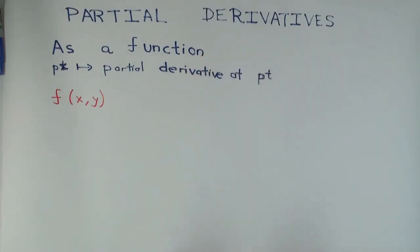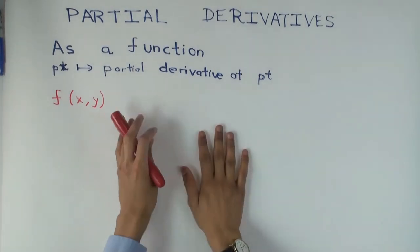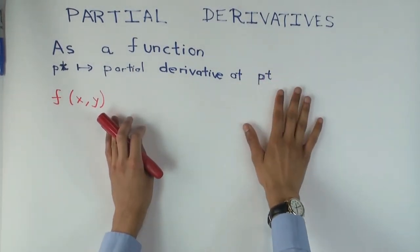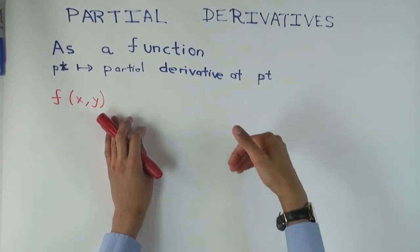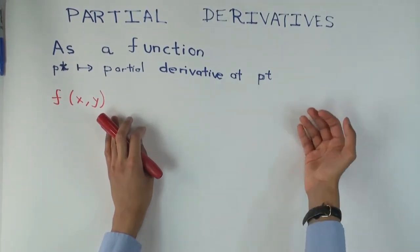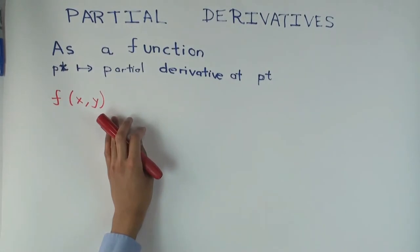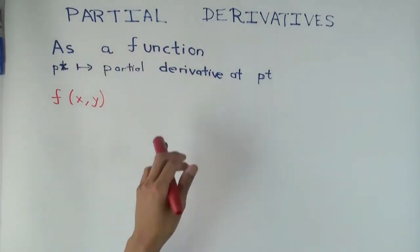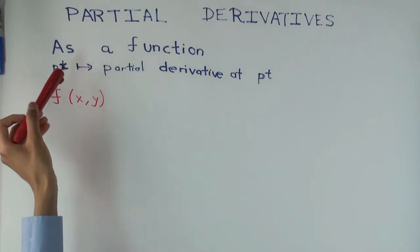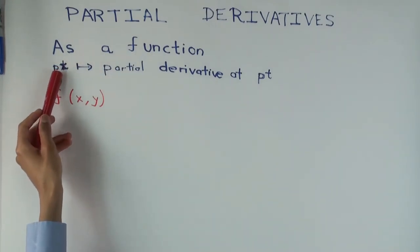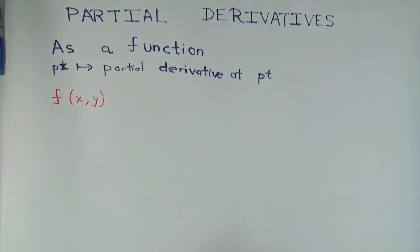So far we have talked about the partial derivative at a point. We talked about a function of two variables and said the partial derivative at a point is defined as a limit of a difference quotient, defined as an ordinary derivative. We also talked about a function of several variables. Now I'm going to talk about it as a function. The idea of a partial derivative as a function is that it sends any point in the domain to the partial derivative of the function at that point.